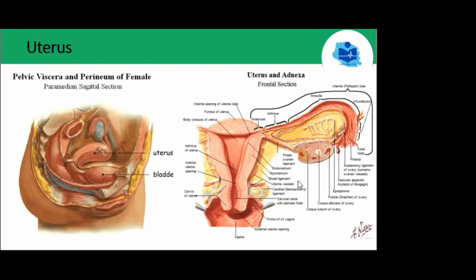Endometriosis is defined as the presence of endometrial tissue outside the uterine cavity. It can be found almost anywhere in the reproductive tract but is most commonly found in the ovaries, the pelvis, and the peritoneum. Within the ovary it can appear as an endometrioma — a blood-filled chocolate cyst. Endometriosis may be due to retrograde flow, metaplastic transformation of multipotent cells, or transportation of endometrial tissue via the lymphatic system.